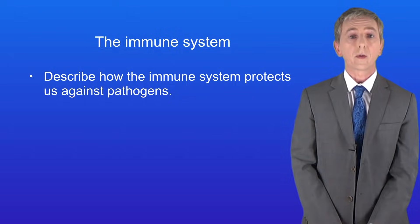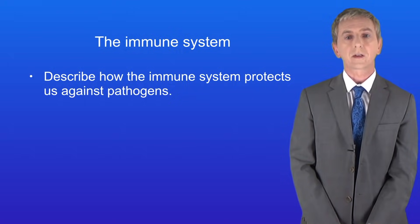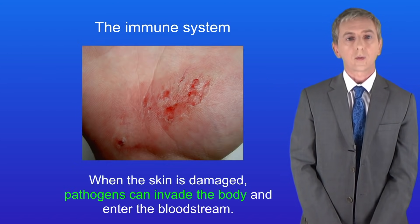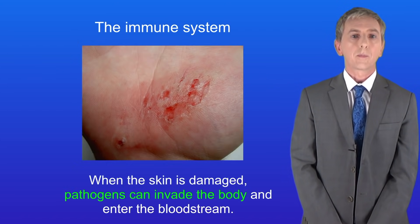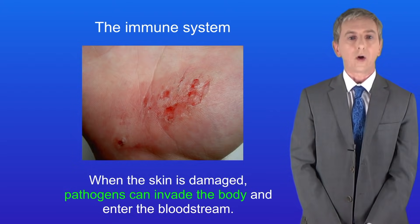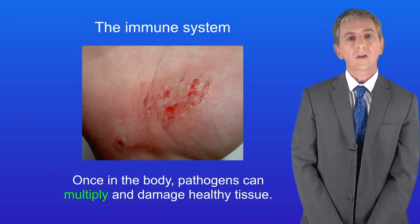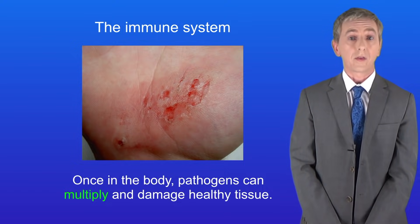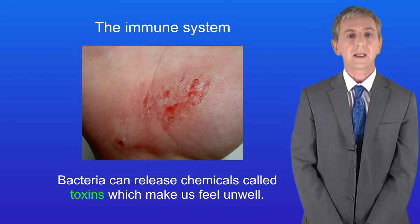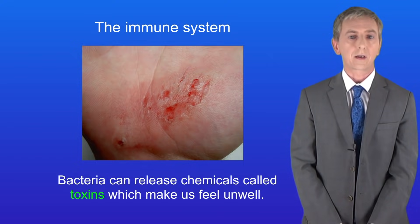In the last video we saw that the job of the non-specific defense system is to stop pathogens from entering the body. However sometimes this doesn't work. A good example is when you damage your skin. Now pathogens can invade the body and enter the bloodstream. Once inside the body pathogens can multiply and they damage healthy tissue. For example bacteria can release chemicals called toxins which make us feel unwell.